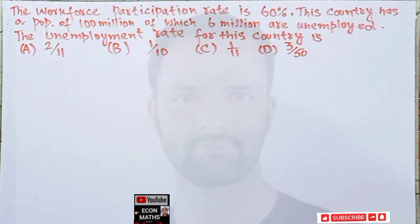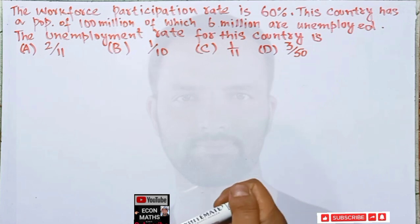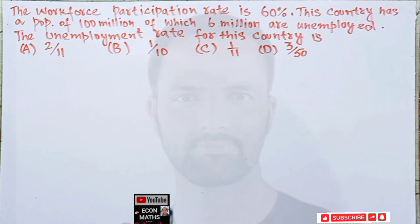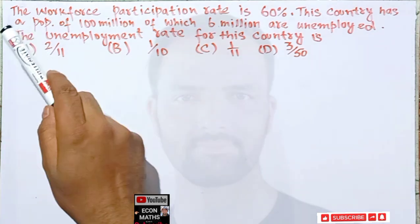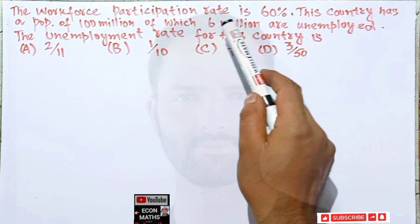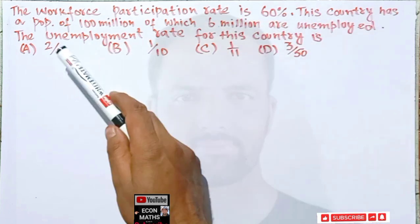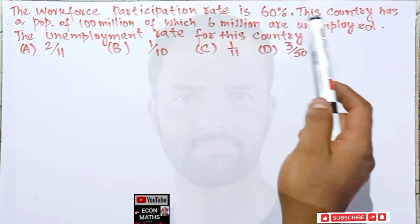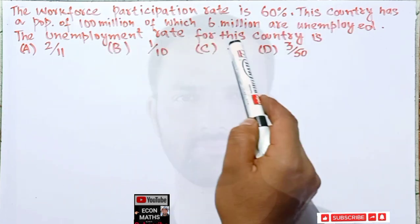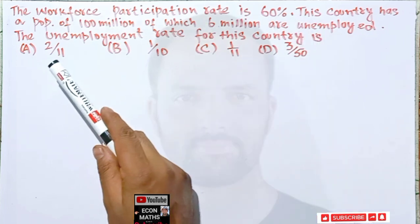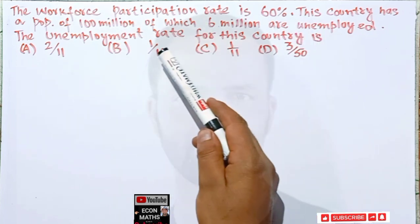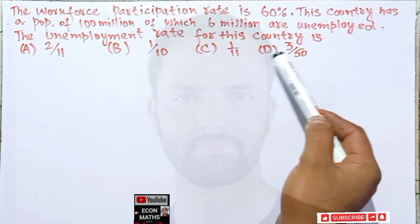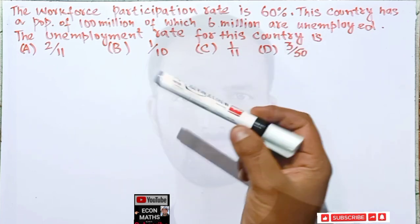Hi, this is Halal. In this video on mathematical economics series, we will try to solve a problem that was asked in the IIT JEE Economics paper of 2021. The question is: the workforce participation rate is 60%, the country has a population of 100 million of which 6 million are unemployed. The unemployment rate for this country is — with options 2/11, 1/10, 1/11, or 3/50.